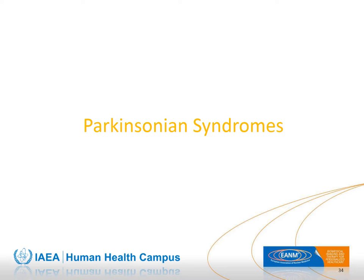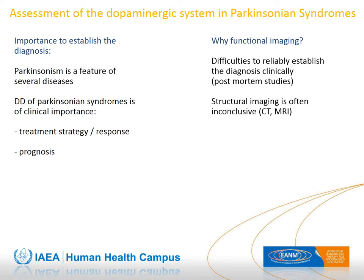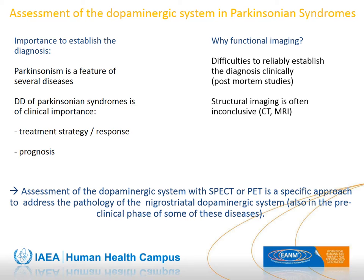Discussing the role of nuclear medicine in Parkinsonian syndromes: assessment of the dopaminergic system is important because Parkinsonism is a feature of several diseases with different treatment strategies, therapy responses, and prognoses. Functional imaging is needed due to difficulties in reliably establishing the diagnosis clinically—as shown in post-mortem studies—and because structural imaging is often inconclusive or positive only in late-stage disease. Assessment of the dopaminergic system by SPECT or PET addresses nigro-striatal pathology even in preclinical phases.